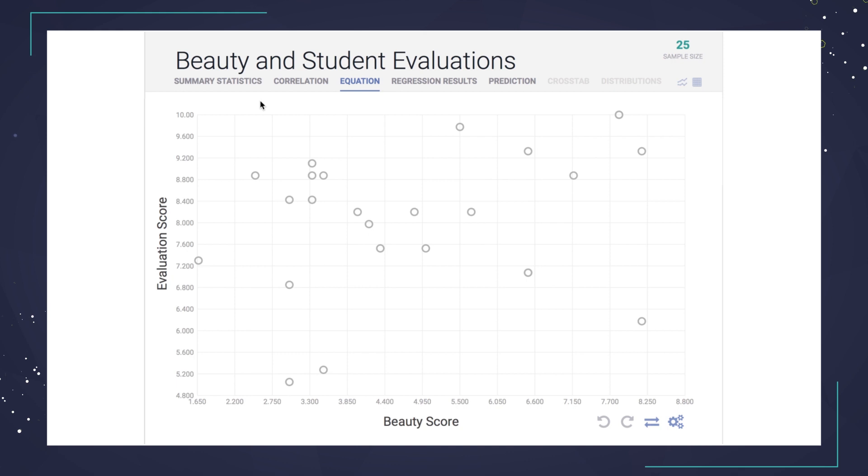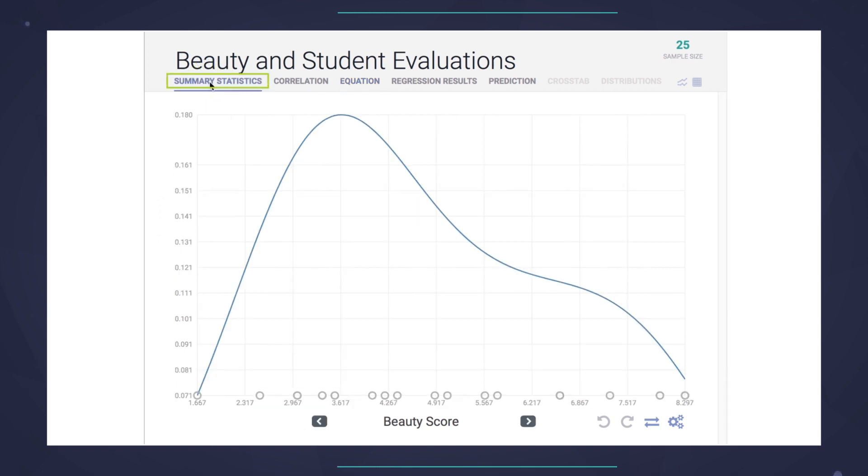Let me give you a quick tour. There are a number of tabs available. In this video, we'll start by using two, the Summary Statistics tab and the Equation tab. If you remember, we're exploring the relationship between the beauty score of a professor and his or her student evaluation score. The Summary Statistics tab shows you at a glance where the values of each variable in your data fall and how much they are spread out.